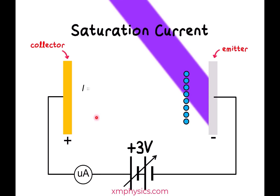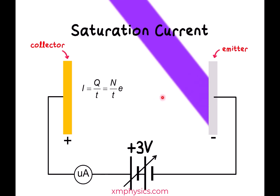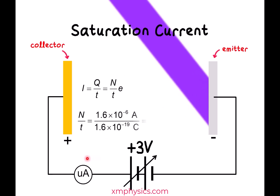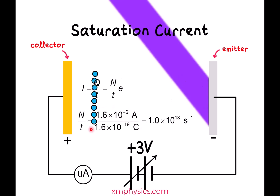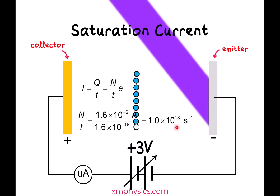What do we do with the saturation current? Electric current is just the rate of flow of charges, Q over T. Since these are electrons, each carrying a charge of e (1.60 × 10⁻¹⁹ C), you can write Q/T as N/T times e. N/T is the rate of emission of photoelectrons — the number emitted per unit time. For example, if the saturation current is 1.6 microamps, then 1.6 microamps divided by the charge of an electron gives 10¹³ per second. That means 10 trillion photoelectrons are being emitted per unit time.